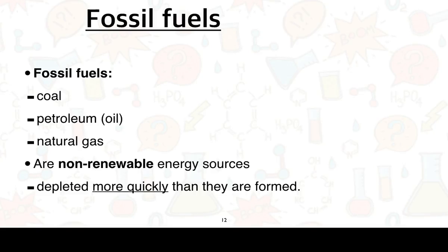From last lesson, I introduced the idea that we have what we call fossil fuels, and they can be classified as one of three: coal, petroleum/oil, and natural gas. They are non-renewable energy sources, meaning they are depleted more quickly than they are formed. We're looking at timescales of millions of years to actually develop a decent amount of fossil fuels.